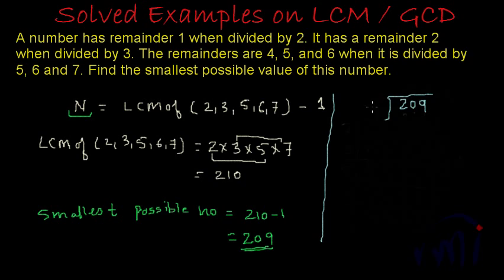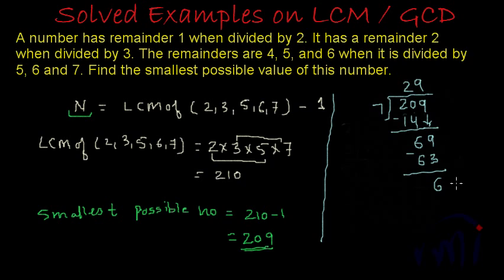Now let's check the result with 7: 7 twos are 14, subtracting gives 6, bring down 9 to get 69, 7 nines are 63, and 69 minus 63 is 6. So we get 6 as a remainder. This was the proof, and the smallest number we were looking for is 209.